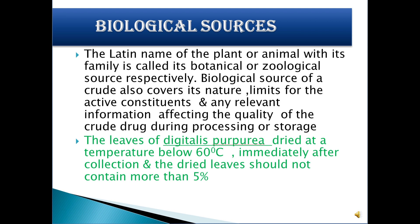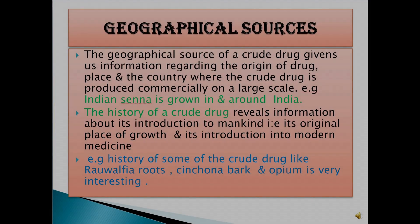For example, the leaves of Digitalis purpurea are one of the cardiotonic drugs. What is the biological source of digitalis? It is the dried leaf of Digitalis purpurea. It belongs to the family Scrophulariaceae. It is dried at a temperature below 60 degrees centigrade immediately after collection, and the dried leaf should not contain more than 5% moisture.